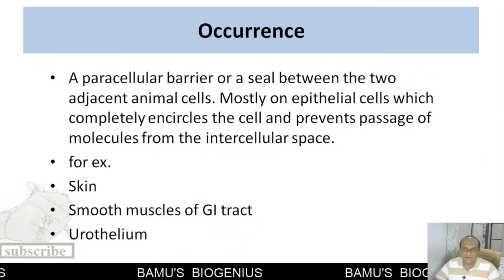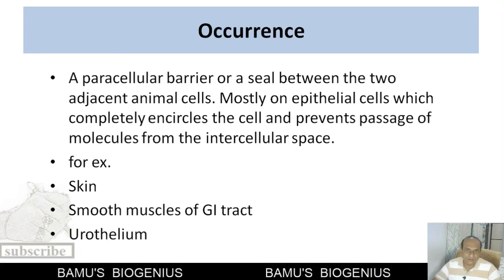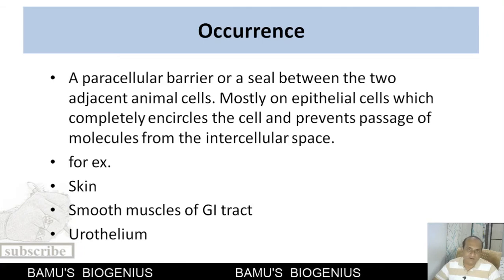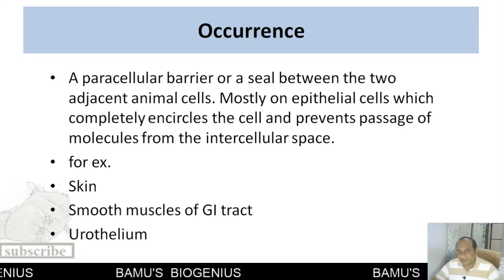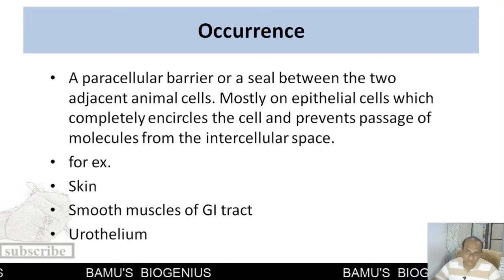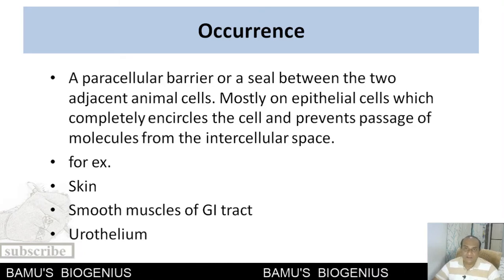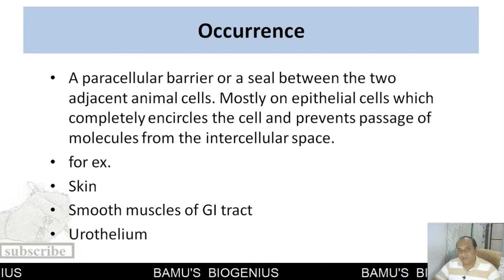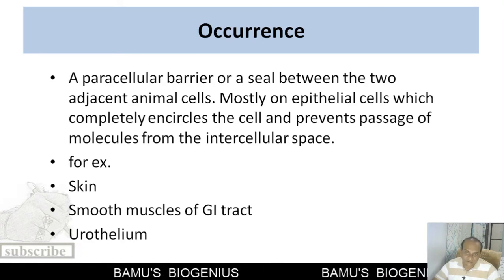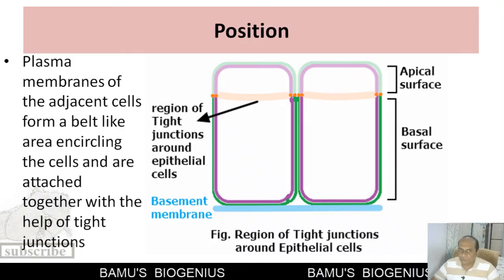Now we will discuss about the occurrence of these tight junctions. As I have already told you, tight junctions are found in epithelial cells. They form a belt-like structure around the epithelial cells towards the apical region and are responsible for completely sealing the epithelial cells so that they form a continuous, impenetrable sheet in tissues such as the skin, smooth muscles of the GI tract, urothelium of the urinary bladder, and epithelial cells of the lungs.